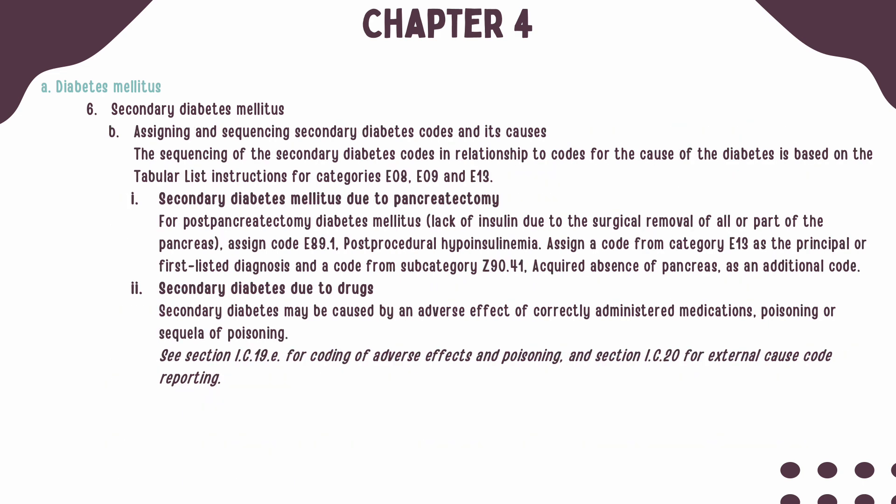The sequencing for secondary diabetes codes with the cause of the diabetes is based on your coding instructions found in the tabular list. When the diabetes is caused by a lack of insulin due to surgical removal of the pancreas, also known as post-pancreatectomy diabetes, it should be coded with E89.1 listed first, followed by a code from subcategory E13 and Z90.41. Secondary diabetes can also be caused by an adverse effect of a drug that is correctly administered, a poisoning, or a sequela of a poisoning. To code these correctly, you will refer to your Chapter 19 guidelines for adverse effects and poisonings, and Chapter 20 for any external causes.